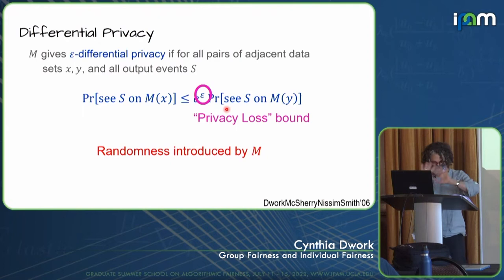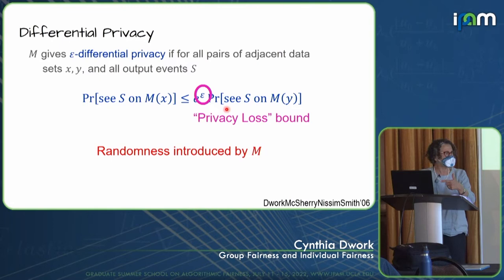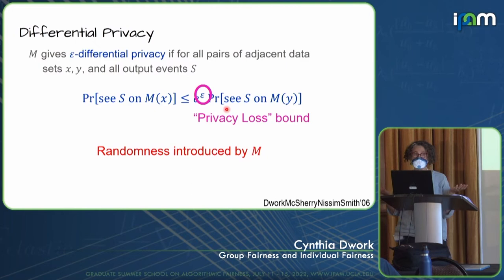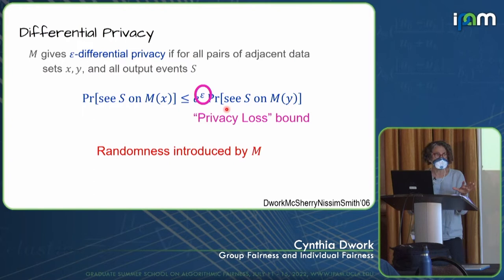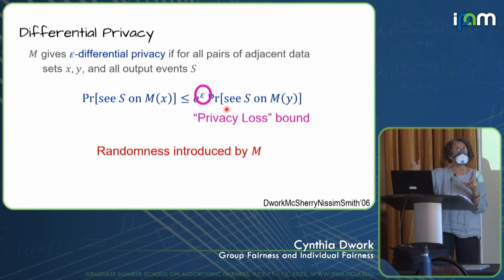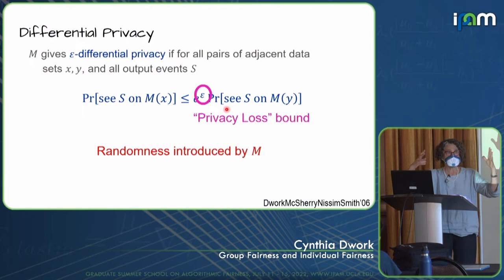Differential privacy is a property of the algorithm. If the adversary even knows all of databases x and y and knows you'll run on one of them but not which, it'll essentially never be able to figure out which one you ran on — no matter how much thinking it does afterward. We call that being future-proof, or closure under post-processing. Differential privacy lets you build complicated private analyses from small differentially private building blocks.